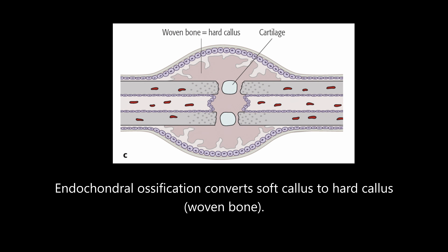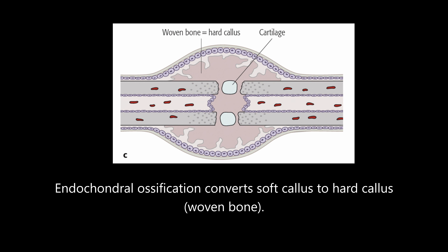Endochondral ossification now converts the soft callus into hard callus, what we call woven bone. Remember, woven bone is still an immature bone. Later, type 10 collagen is expressed as an extracellular matrix and starts undergoing calcification. Over time, cartilaginous calcification occurs at the junction between the chondrocytes and newly forming bone, making the hard callus harder.